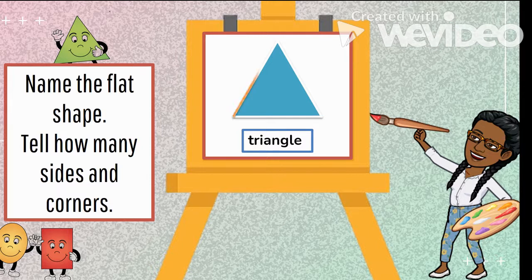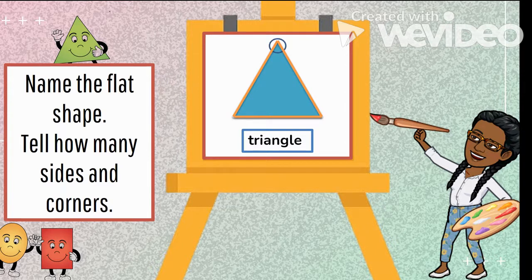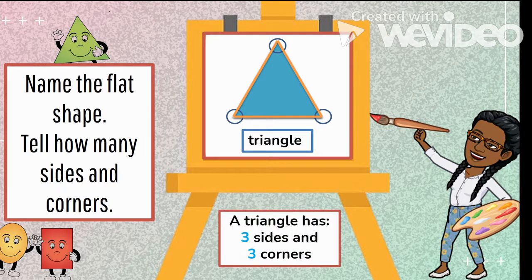It has one, two, three sides. And let us count the corners. One, two, three corners. Let us say it again. A triangle has three sides and three corners.